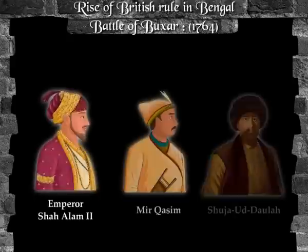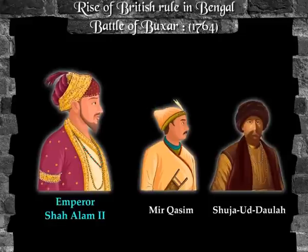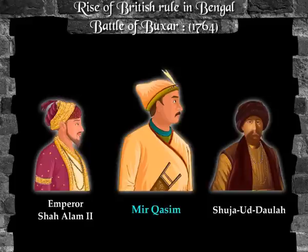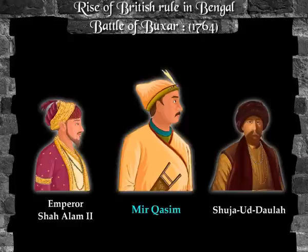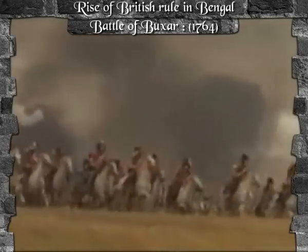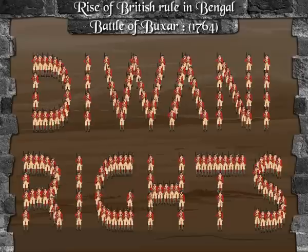Battle of Buxar, 1764: This battle was fought between the British and the combined forces of Emperor Shah Alam II, Mir Qasim (Nawab of Bengal), and Shuja-ud-Daula (Nawab of Awadh). Mir Qasim was the most efficient of all the Nawabs of Bengal. Unlike Mir Jafar, he kept himself away from British influence, even changed his capital from Murshidabad to Monghyr, and wanted to end British private trade. This angered the British and led to the Battle of Buxar. The British then acquired Diwani rights and soon became the masters of Bengal, beginning their formal rule in India.